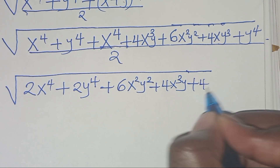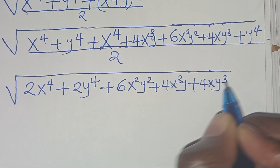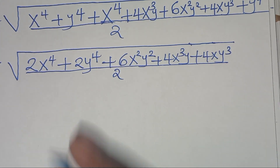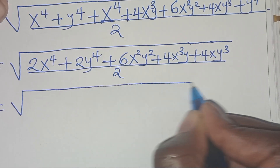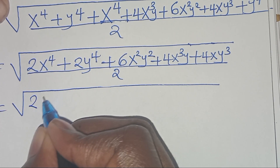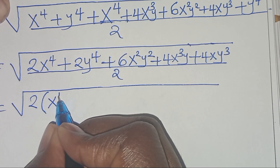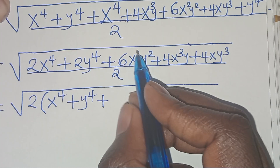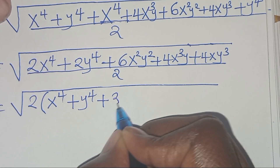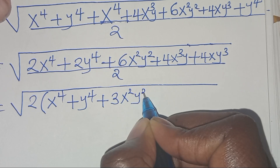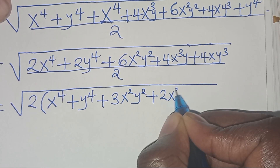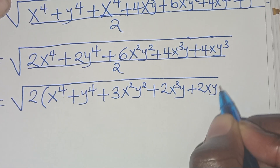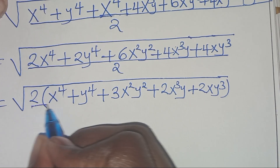The next step is to factor out — 2 is common here, so we can factor out 2, so that we have 2 into the parentheses: x to power 4 plus y to power 4 plus 3x squared y squared, then plus 2x to power 3 y, then plus 2xy to power 3, close the bracket, then divided by 2.